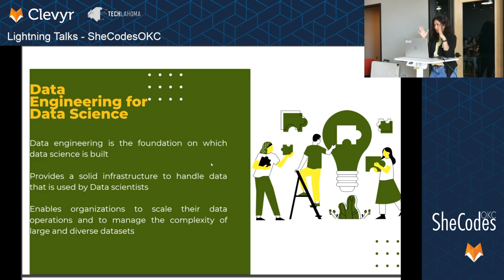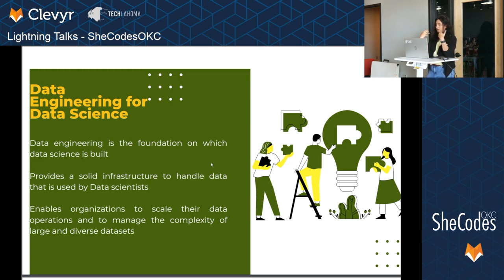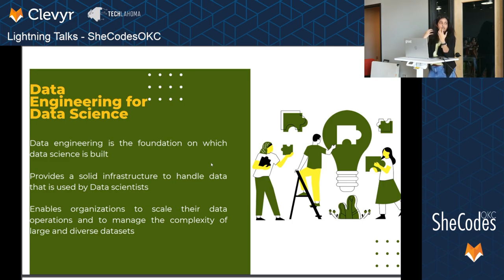Data science is all the buzz right now — everybody likes it, it's magical. But I think data engineering would account for more than 60 to 70 percent of the work, because identifying and cleaning the data, and even the analysis part within data engineering, takes the most time. We prep it and then send it off to the data scientist to do their work. This provides a solid infrastructure and a precursor to data science. It also helps companies scale their data — a new company might not have a lot of data, but as they grow, data engineering gives them the infrastructure to handle that.